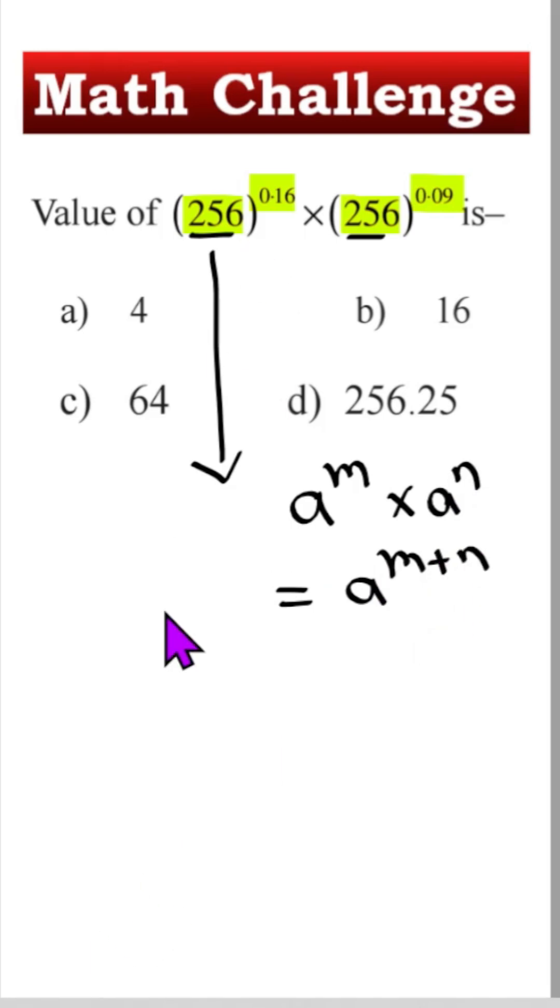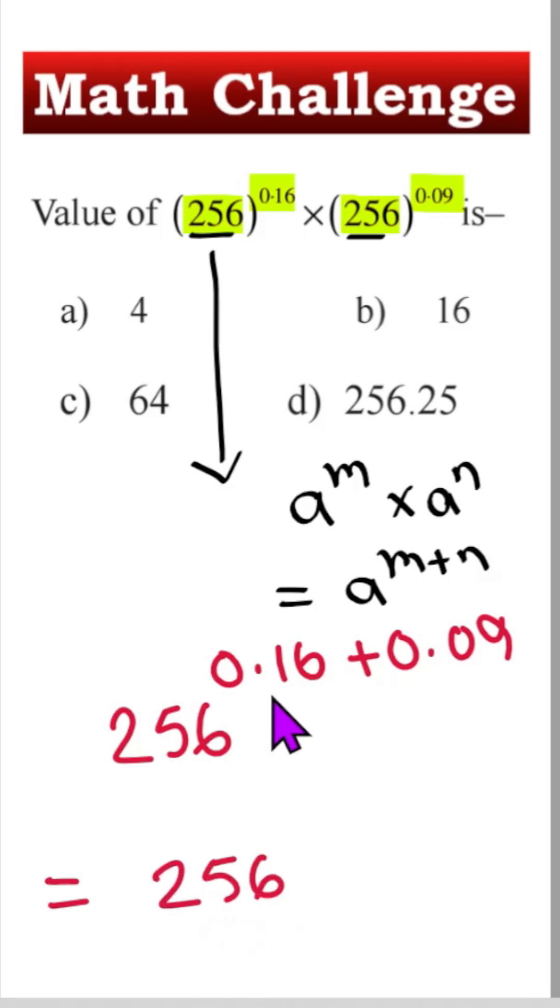Therefore, this one we can write 256 to the power 0.16 plus 0.09. Then 256 will be unchanged. 0.16 and 0.09, once we make summation, we will get 0.25.